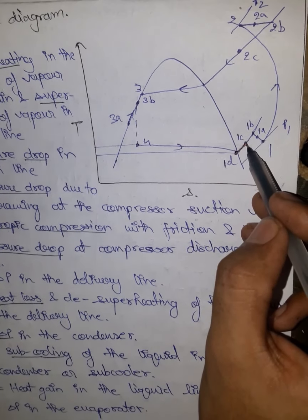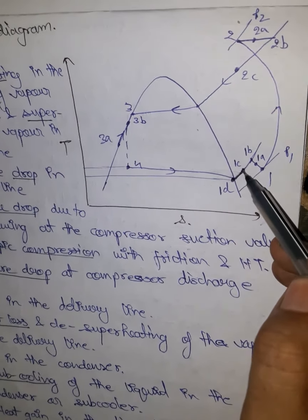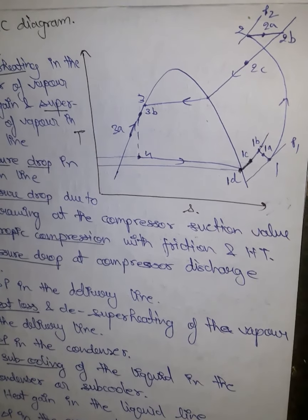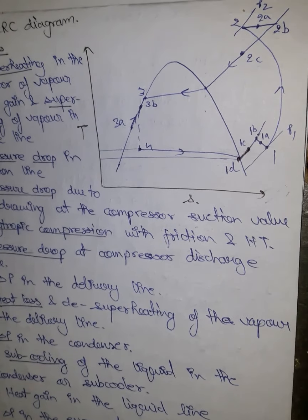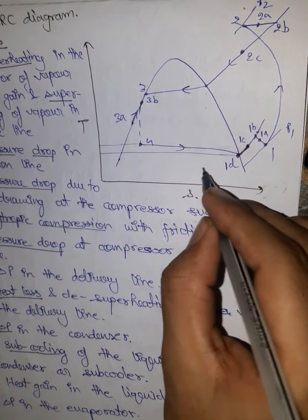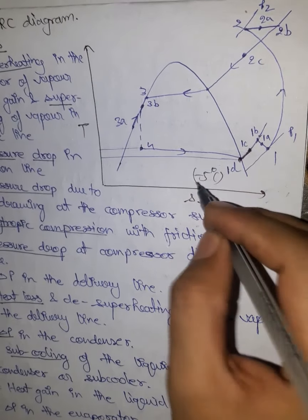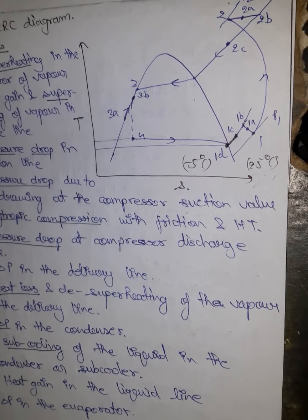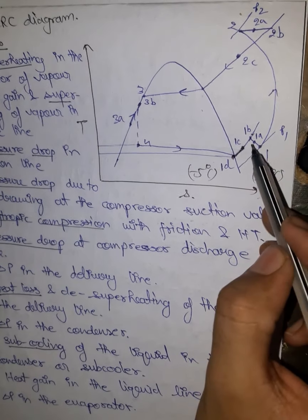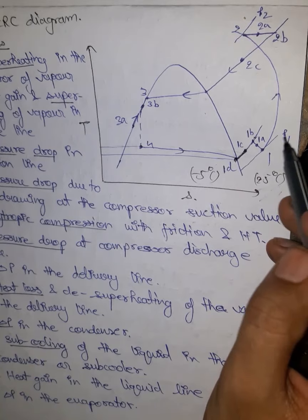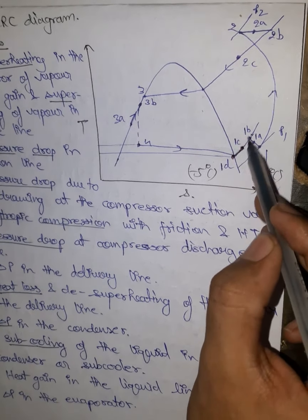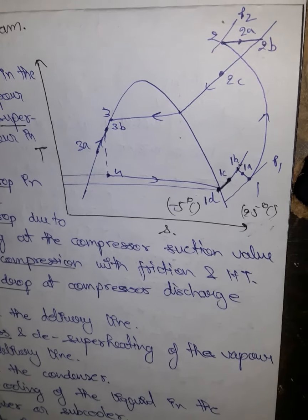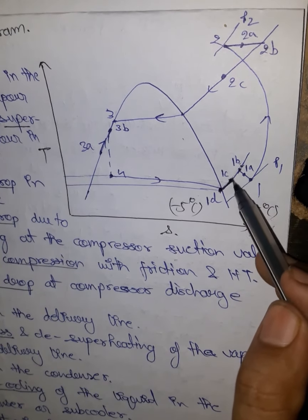From point 1c to 1b, heat gain from the surroundings is occurring because the evaporator temperature is very low and the outside temperature is higher. For example, the evaporator temperature may be around minus 5 degrees Celsius and the outside temperature around 25 degrees Celsius, so heat naturally flows from outside into the suction line — the line carrying refrigerant to the compressor. From 1c to 1b, superheating is happening due to this heat gain.